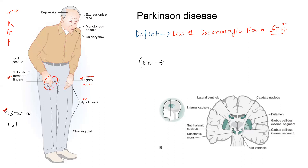Apart from that, patients can have an expressionless face, monotonous speech, salivary flow, depression, and a shuffling gait — otherwise known as festinating gait. These are all the important features of Parkinson's disease.